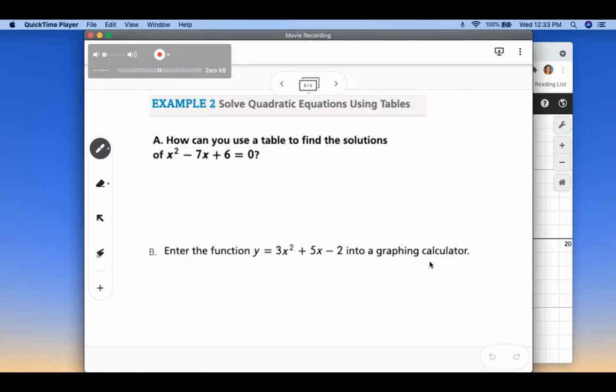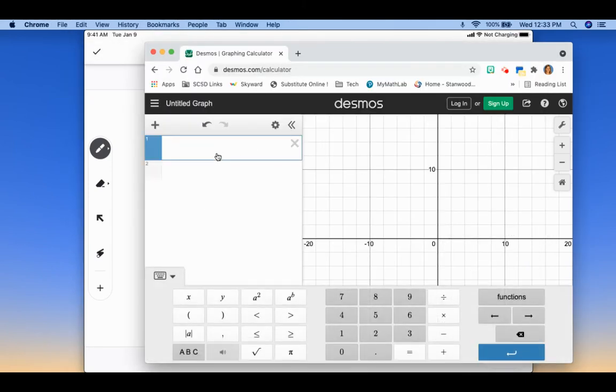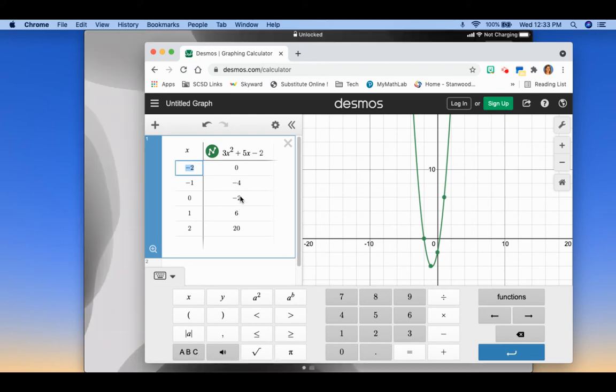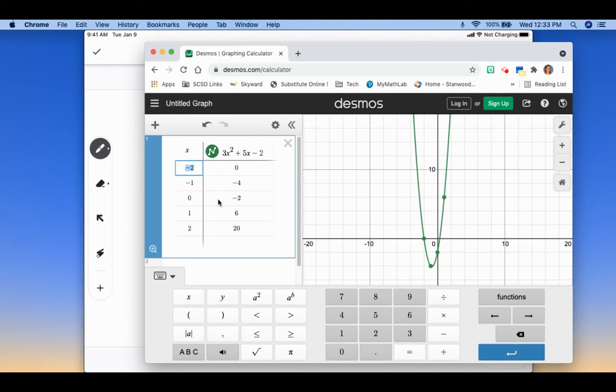Okay, so then the next one that we're looking at is 3x². So y = 3x² + 5x - 2. I'm going to change this to a table. And you can see that I can see one zero, but I don't see the other one. And we know that there is a zero between 0 and 1 because this value changes from negative to positive. You can see here, negative, positive. So we know there's a zero in there.